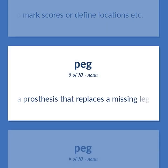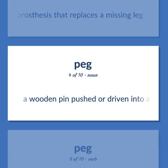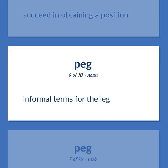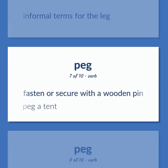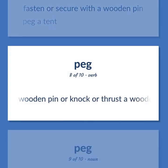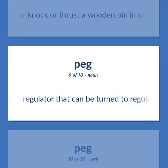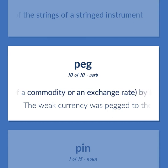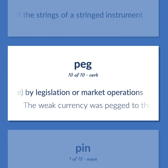Peg: a prosthesis that replaces a missing leg. A wooden pin pushed or driven into a surface. Succeed in obtaining a position. Informal terms for the leg. Fasten or secure with a wooden pin — peg a tent. Pierce with a wooden pin or knock or thrust a wooden pin into. Regulator that can be turned to regulate the pitch of the strings of a stringed instrument. Stabilize the price of a commodity or an exchange rate by legislation or market operations — 'The weak currency was pegged to the US dollar.'